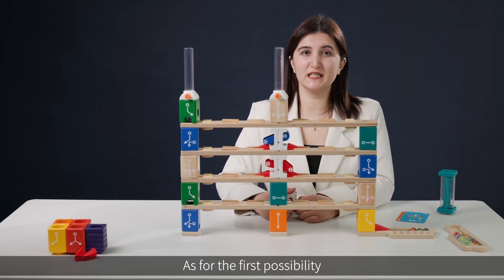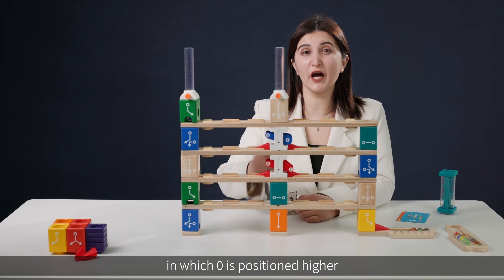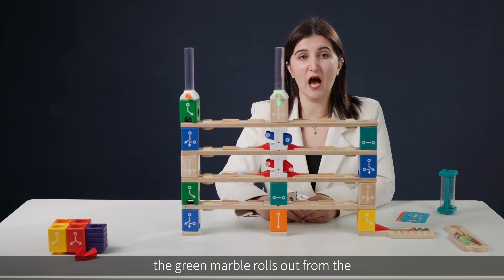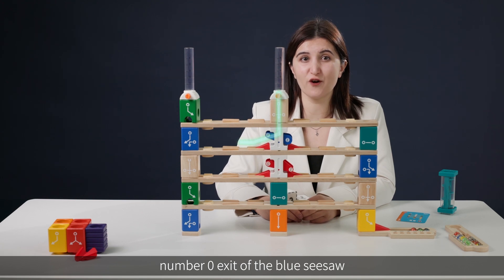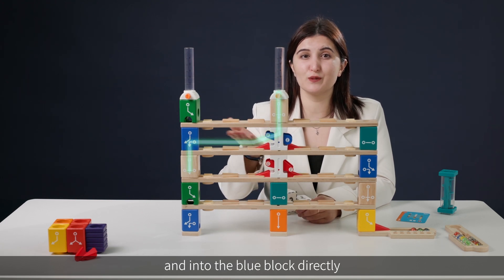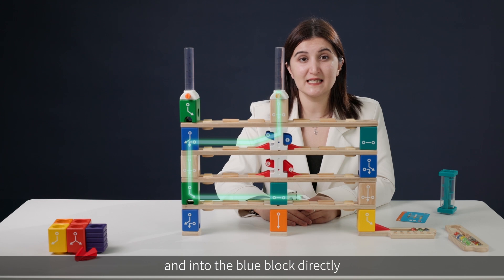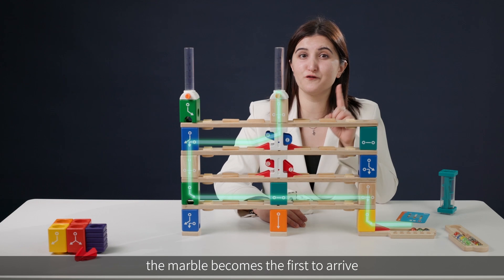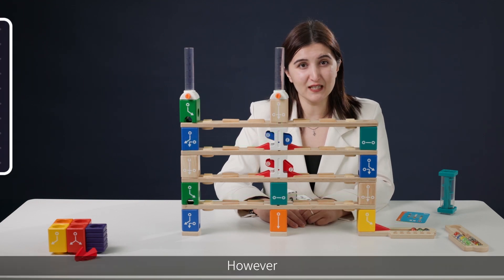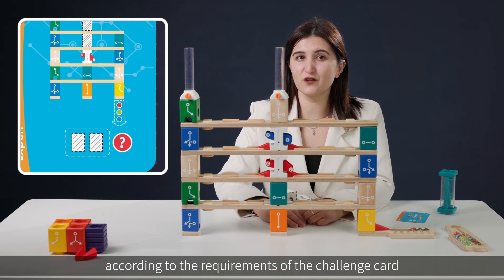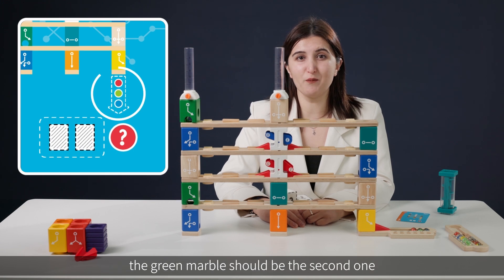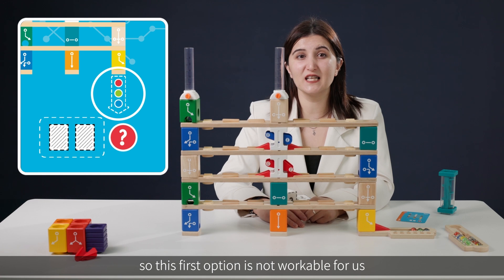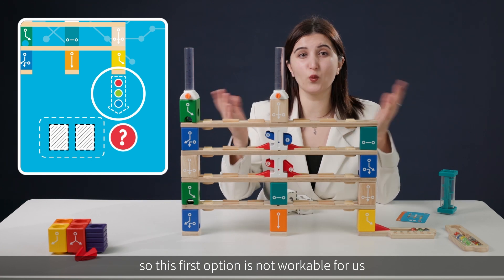As for the first possibility, in which zero is positioned higher, when launching the marbles together, the green marble rolls out from the number zero exit of the blue seesaw and into the blue block directly, skipping two levels of tracks. In this way, the marble becomes the first to arrive. However, according to the requirements of the challenge card, the green marble should be the second one to reach the final. So, this first option is not workable for us.